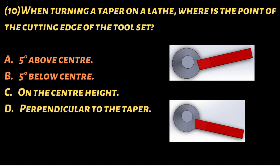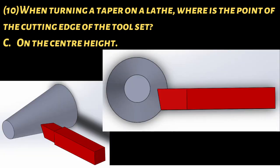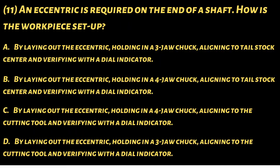Let's take a look at the first two: five degrees above, five degrees below. With modern tooling this really isn't applicable, so right off the bat we can disregard question A and B. Perpendicular to taper - we can have the compound rest set at almost any angle, so this question is almost irrelevant as well. On the center height is the correct answer. If you're above or below the center line, your angle will not come out correct.